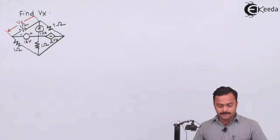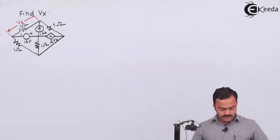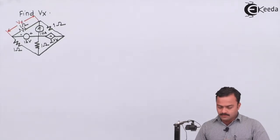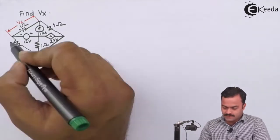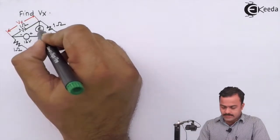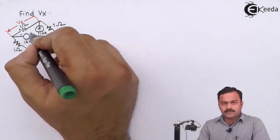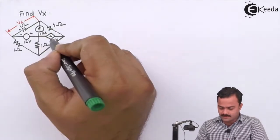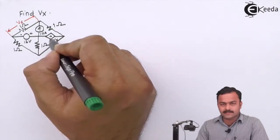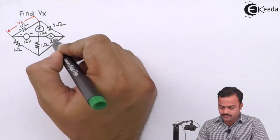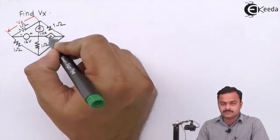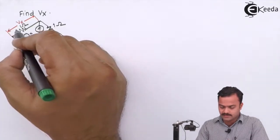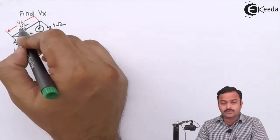So here is the problem. In this problem we are having so many nodes present — two independent sources and dependent sources given to Vx, which is a current source dependent upon the voltage Vx given across this one node.